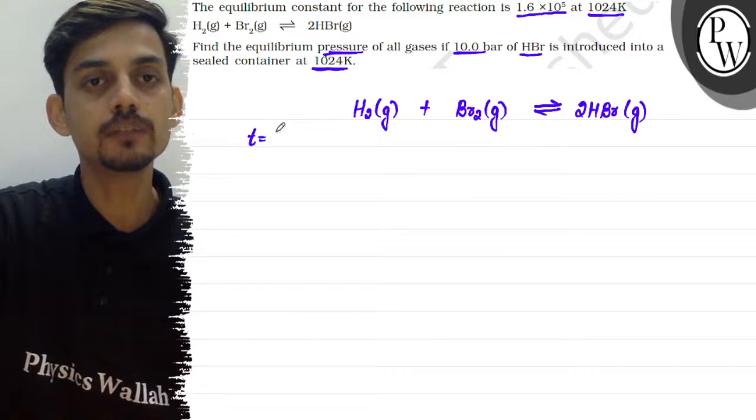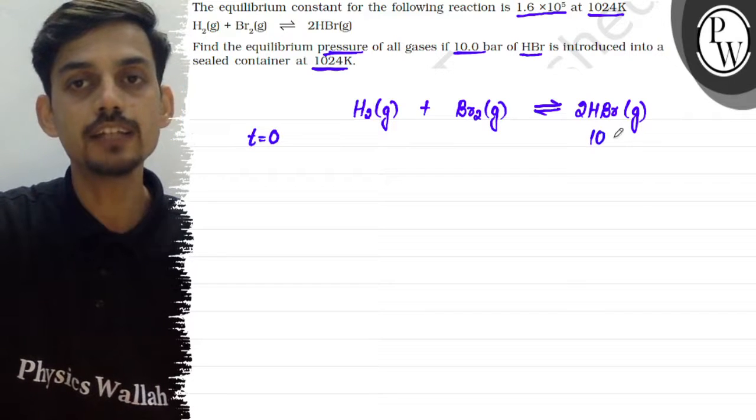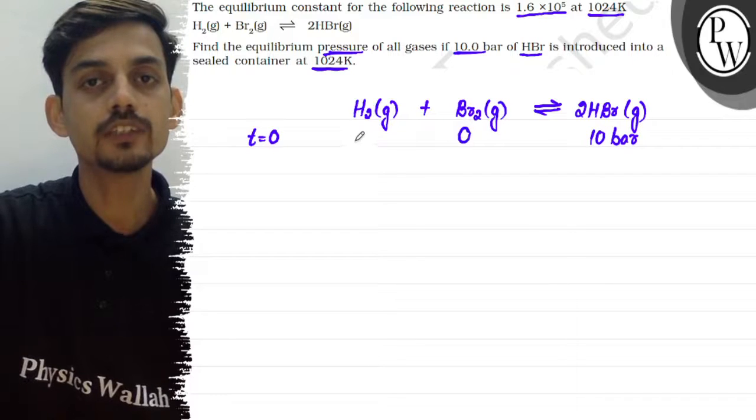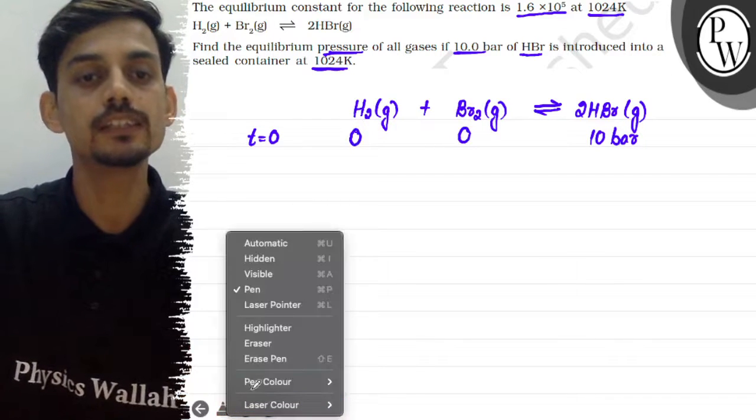At t = 0, initially 10 bar of HBr is introduced. The initial partial pressures of H₂ and Br₂ are both 0.